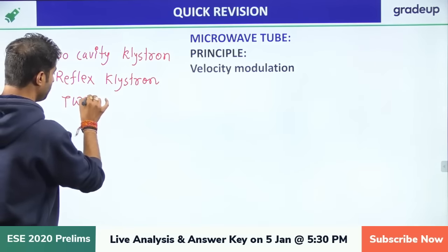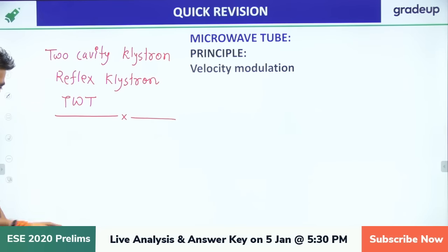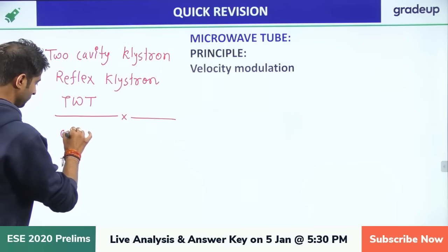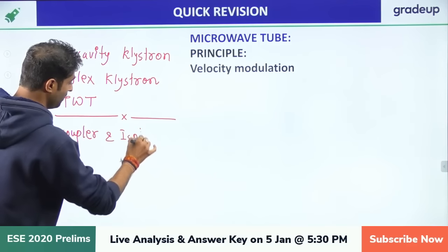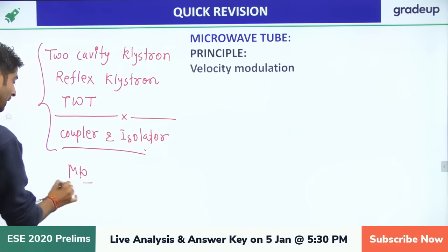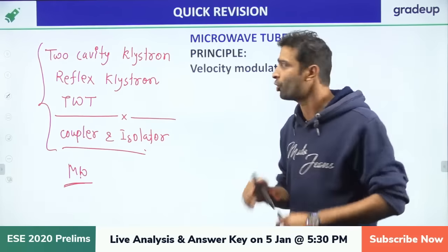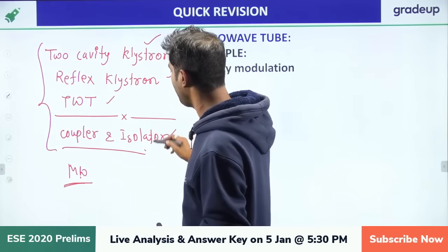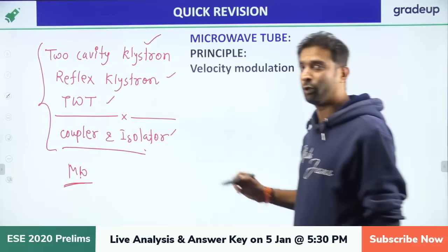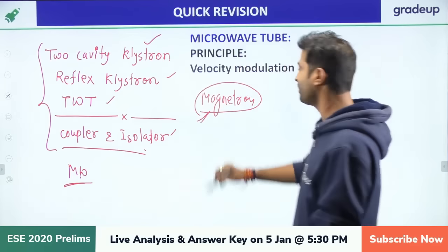After TWT, we will discuss a numerical from ISRO 2018 on coupler and isolator. We will also do previous year ISRO questions related to klystron, reflex klystron, TWT, coupler, and isolator. One more topic is magnetron — if there is time, we will definitely cover that too.